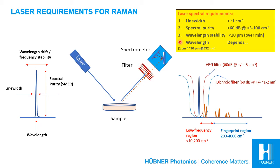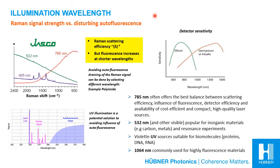Finally, there is the question of wavelength. The best wavelength for a Raman experiment depends on several parameters, mostly on what material is being studied. First, there is the Raman scattering efficiency versus autofluorescence. The Raman scattering efficiency scales with wavelength to the power of minus 4, so the Raman signal is much stronger at shorter wavelengths.